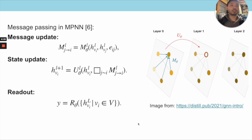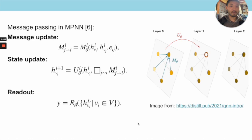The readout step maps the final hidden layer to outputs and can take many forms depending on the task. For node-wise classification, the readout outputs another graph using the same message-passing steps. For global classification — such as predicting properties of a molecule — the readout aggregates features from the final hidden state into a single vector. Importantly, the MPNN framework is general enough that most existing graph neural network architectures, and even some models not traditionally seen as GNNs, can be expressed as message-passing neural networks.